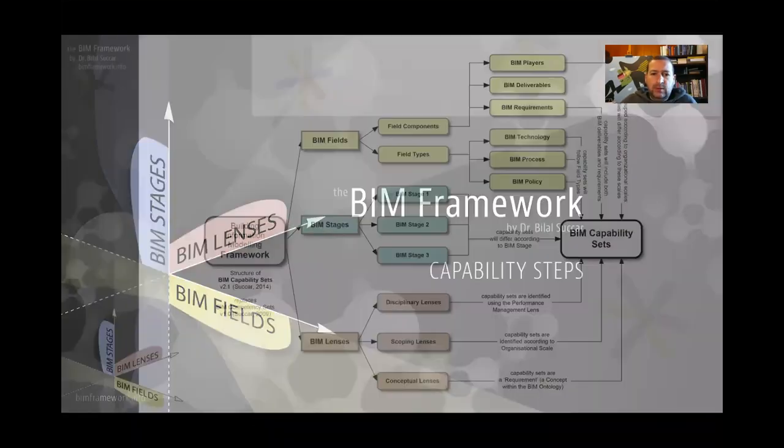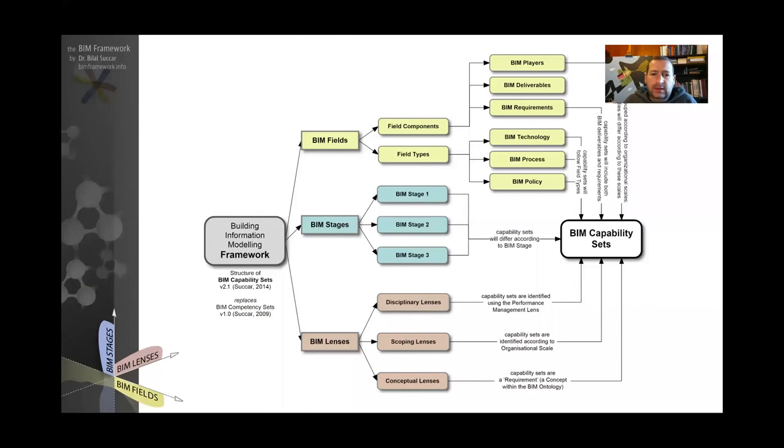Now, capability steps is a combination of the three axes: the fields, the stages, and the lenses. If you look at this diagram, it explains to us how BIM capability sets and steps—and I'm going to cover the difference between these two in a second—is derived.